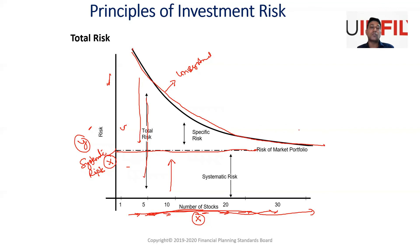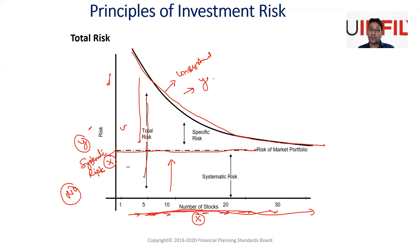I've seen this question appear in exams: Can systematic risk be reduced by adding more securities to a portfolio? The answer is no. Can unsystematic risk be reduced by adding more securities to a portfolio? The answer is yes. This was systematic and unsystematic risk and their differences. I hope it is now clear to all of you. Thank you very much — I'll be coming with more such videos.